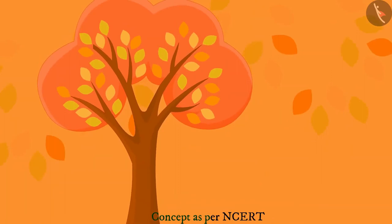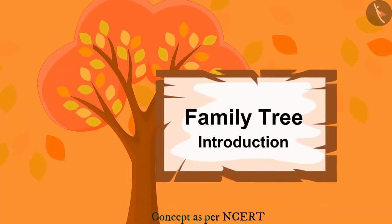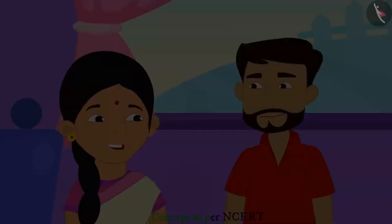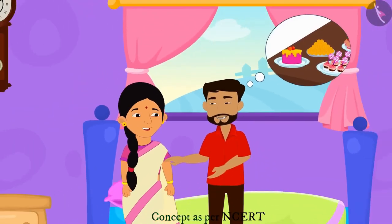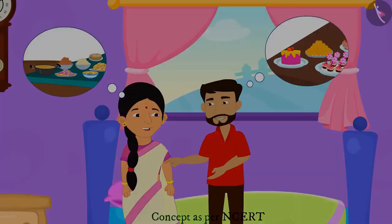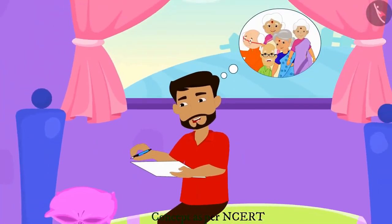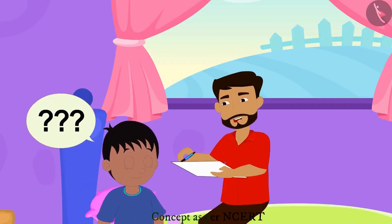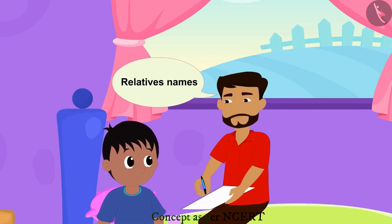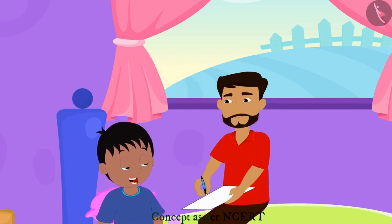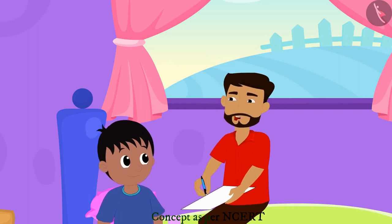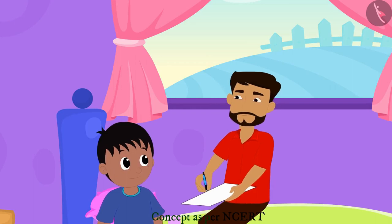Hello children, in this video we will learn about the family tree. Raju's 10th birthday is coming. His parents have decided to celebrate his 10th birthday in a grand manner and are making a list to invite all their relatives. Father, what are you doing? I am making a list of the names of all my relatives. So many people — what do I address them as? They all have a different relationship with you, Raju, so you cannot address them only in one way. Let me explain to you.